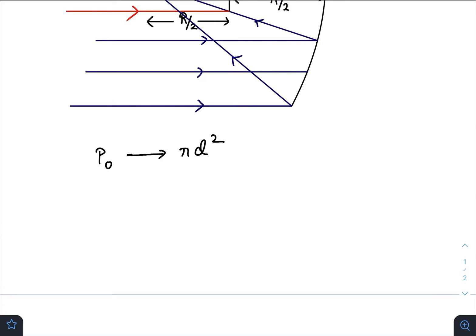So P naught amount of power is incident for a cross sectional area of pi d square, where d is the aperture of the mirror. So for pi r square, the power incident is P naught divided by d square times r square.